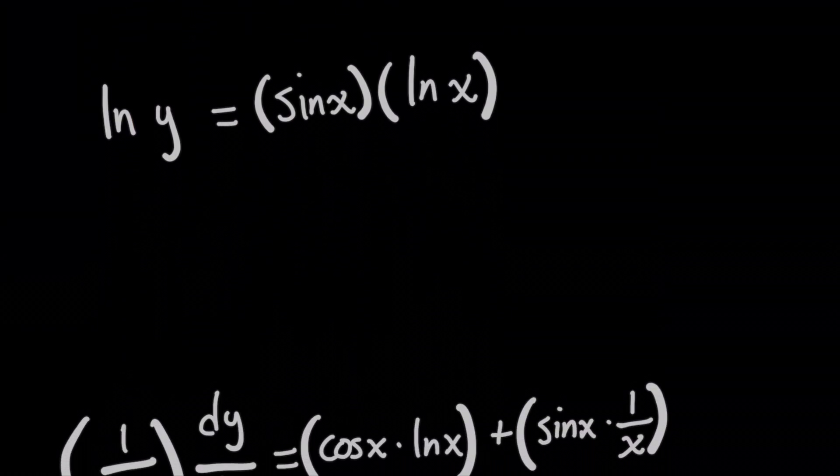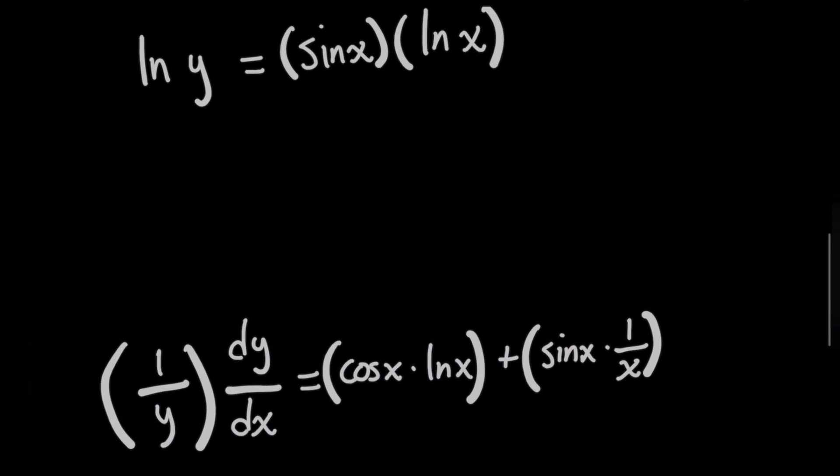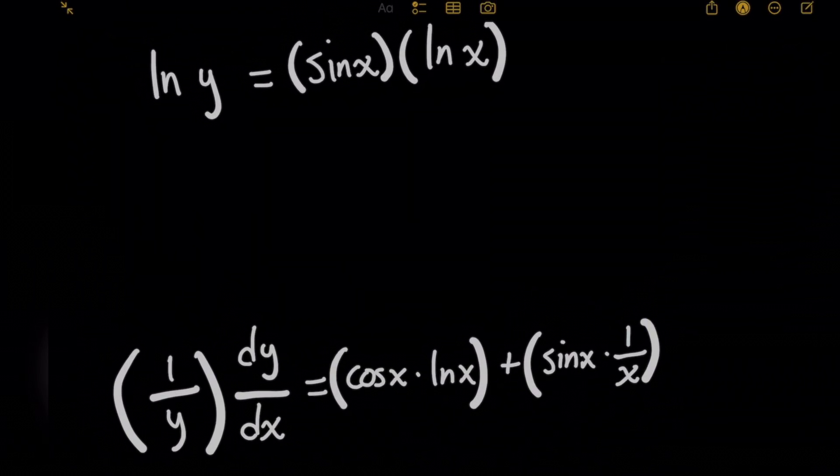then when I take the derivative of both sides, because everything is separated out, for the left-hand side here, I will treat natural log of y as if it were a control variable like x and just take the derivative of it, which would be 1 over y, but then put dy over dx in front, right? Because I took the derivative with respect to y as the control variable.